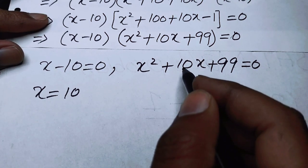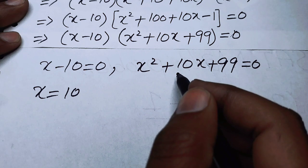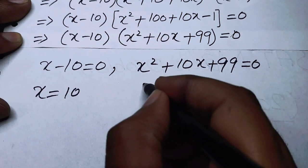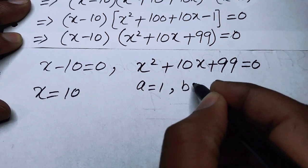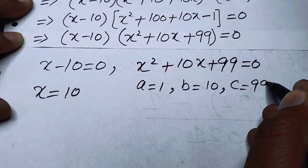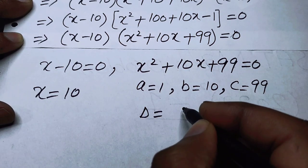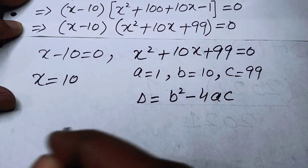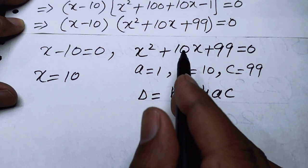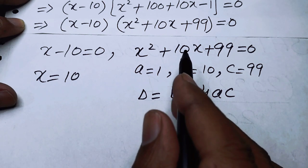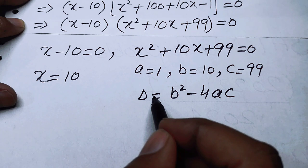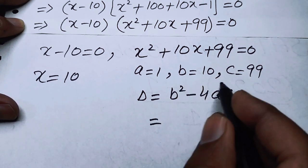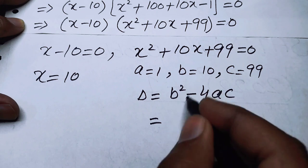We check whether the quadratic gives complex or real roots using the discriminant delta equals b squared minus 4ac. If delta is less than 0, the roots are complex; if delta is greater than or equal to 0, the roots are real. Here a equals 1, b equals 10, c equals 99. Substituting: 10 squared minus 4 times 1 times 99.